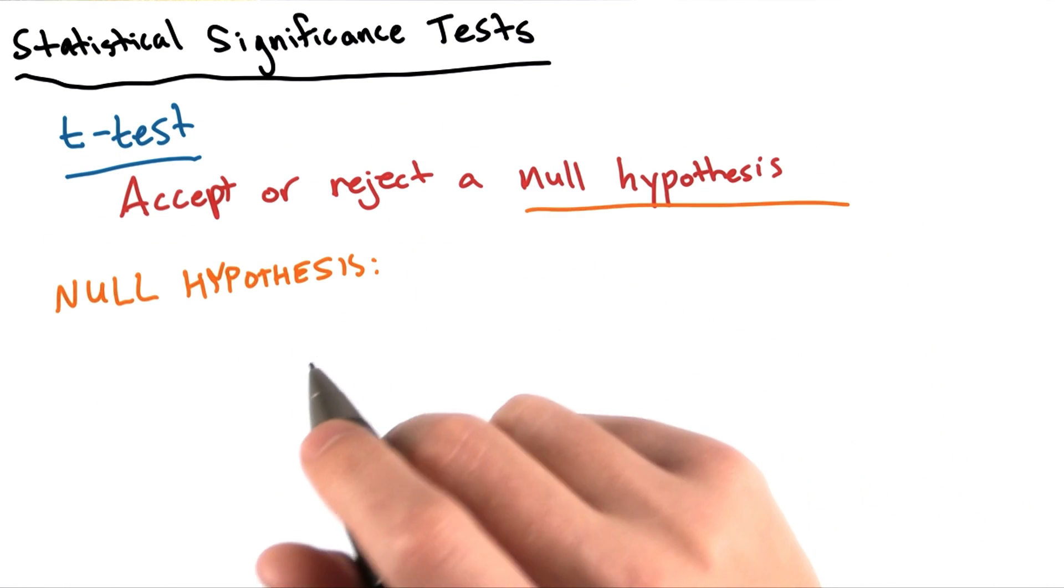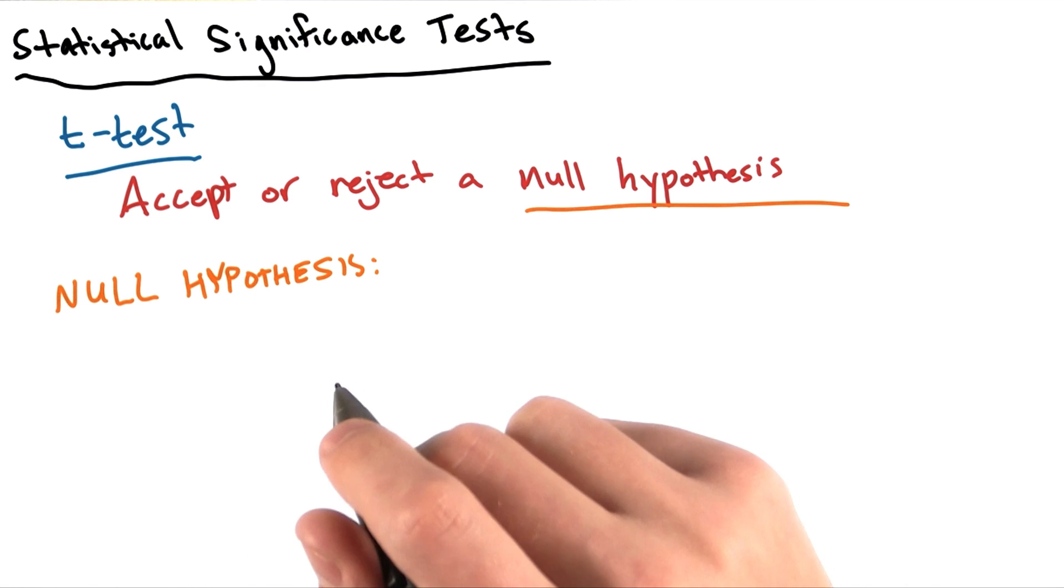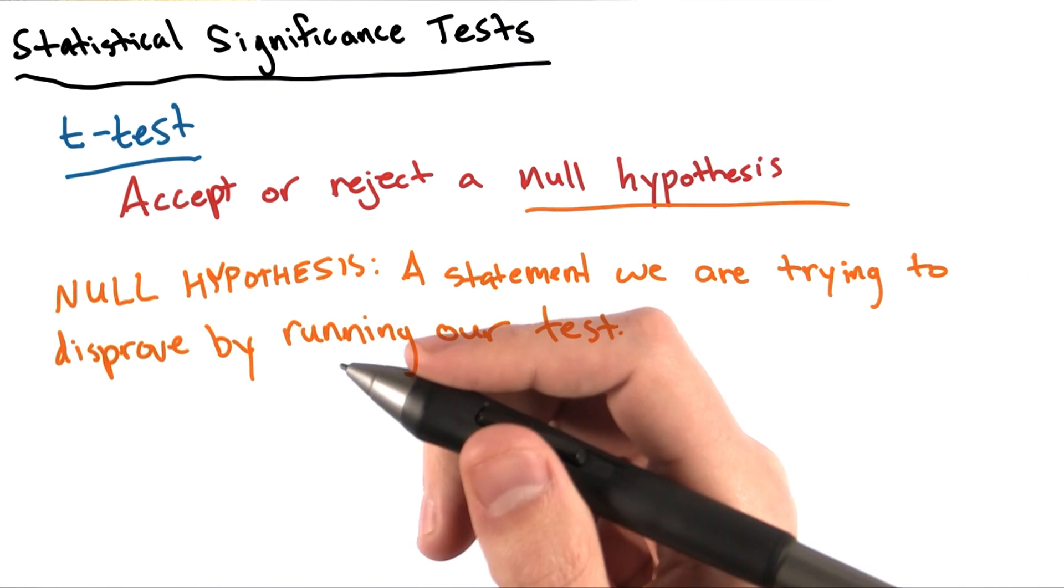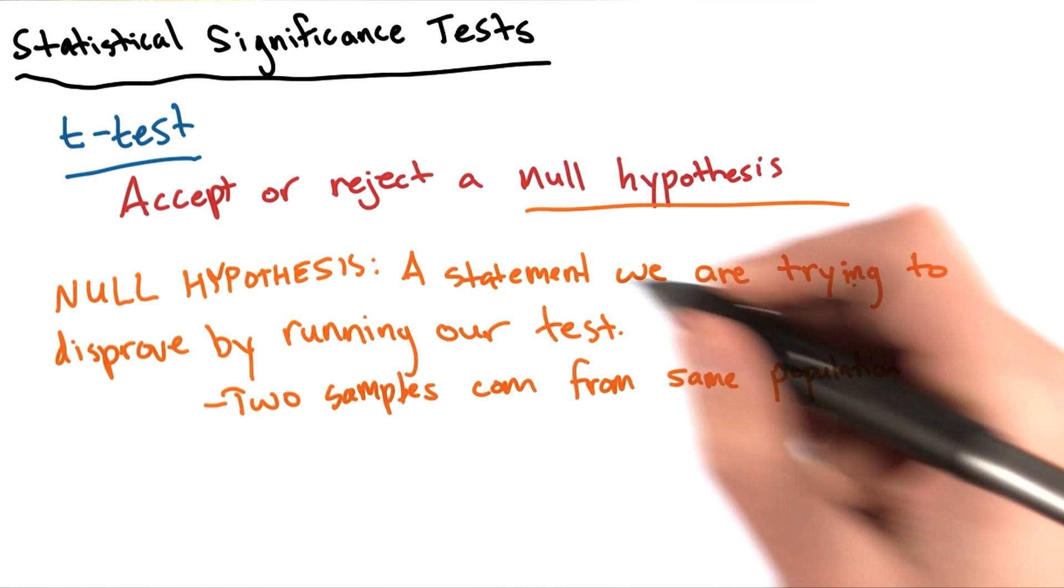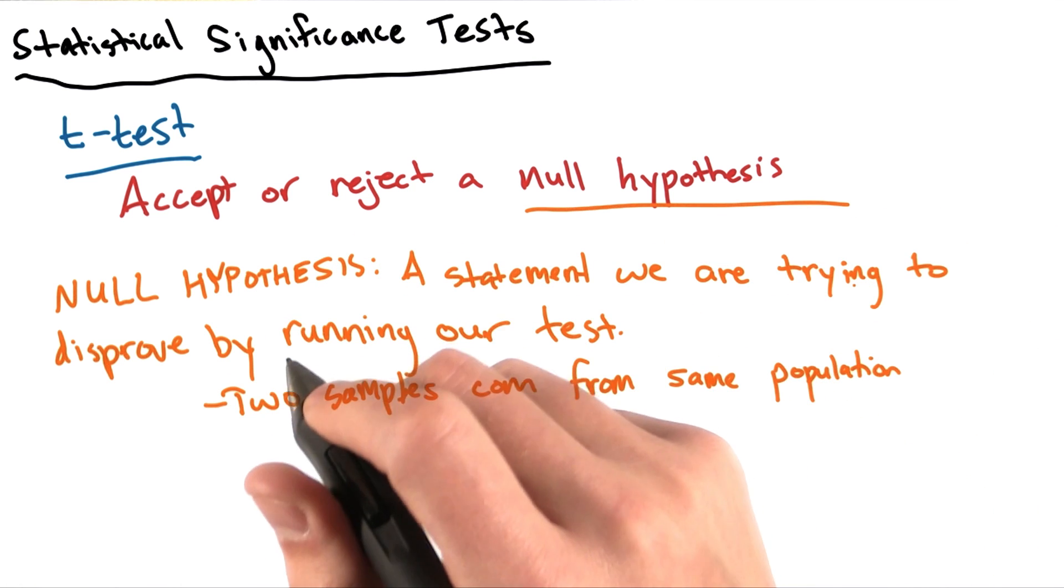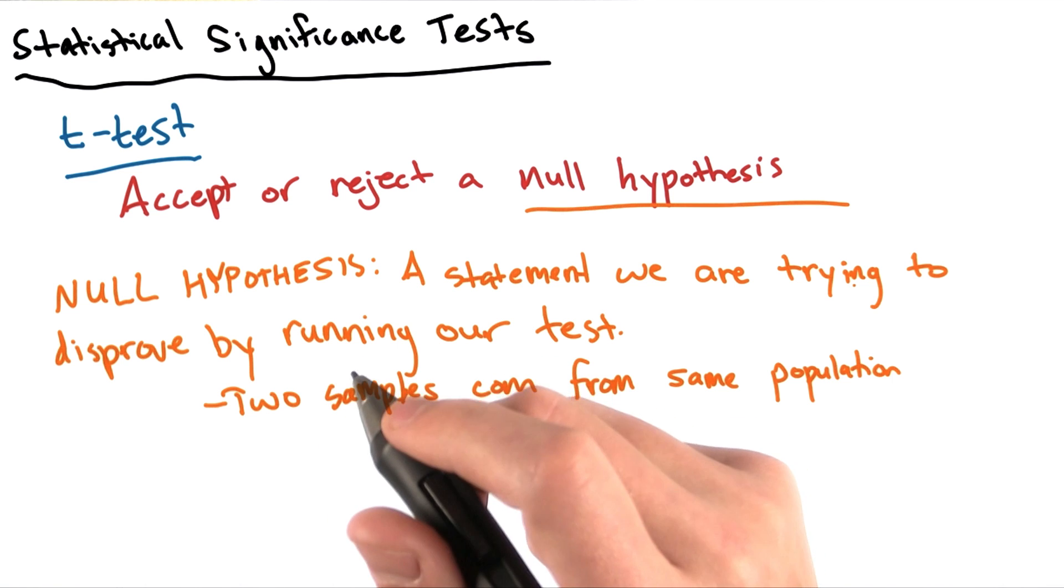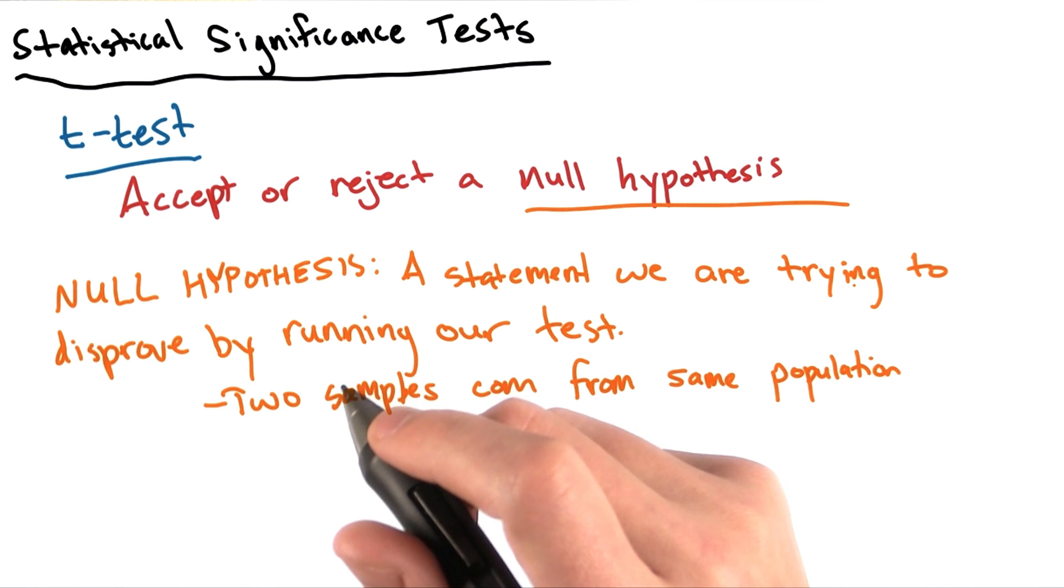A null hypothesis is generally a statement that we're trying to disprove by running our test. For example, that two samples came from the same population. This might mean that left-handed and right-handed batters show no real difference in their batting average, or that a certain sample is drawn from a particular probability distribution.